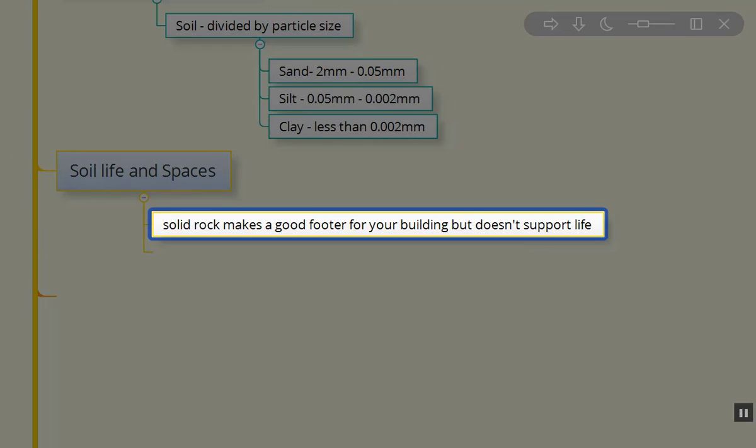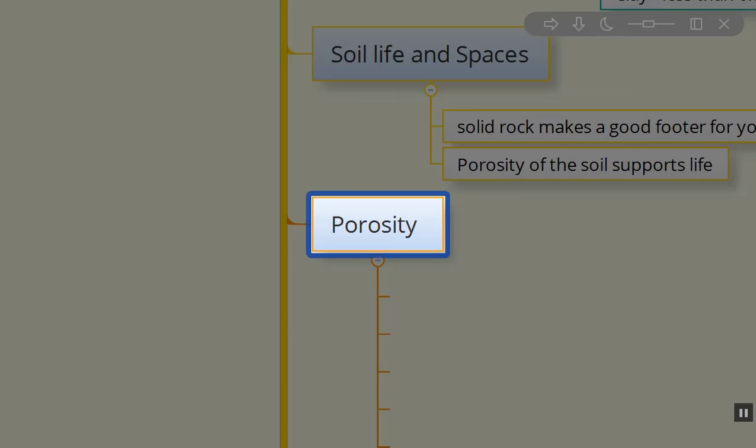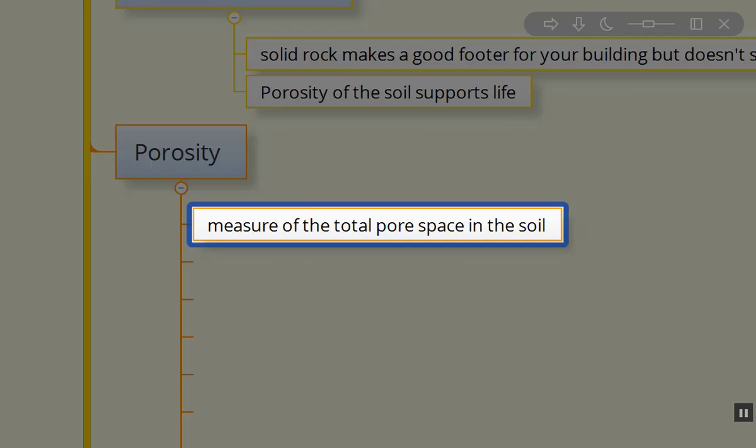Soil life really is dependent on the spaces. For example, solid rock makes a fantastic foundation. You can build a good foundation that can last centuries. However, solid rock does not support life. So, it's a porosity of soil that actually supports life.